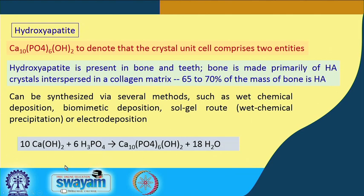The basic reaction is: 10 molecules of calcium hydroxide reacted with 6 molecules of H3PO4 gives Ca10(PO4)6(OH)2 with 18 molecules of water. This simple direct reaction between two components gives hydroxyapatite, which on a solid support can be formed as a biomaterial — a biomimetic material for bone and teeth. Thank you very much.